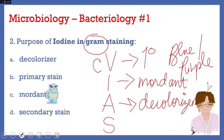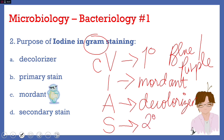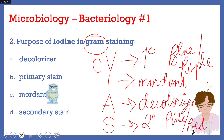The third reagent, acetone alcohol, acts as our decolorizer. This is said to be the most critical step because at this stage we cannot yet differentiate gram-positive from gram-negative bacteria. Gram-positive bacteria retain the primary stain, but gram-negative bacteria are decolorized because of large amounts of lipopolysaccharide on their cell wall. The last letter S stands for safranin, which acts as our secondary stain, taken up only by gram-negative bacteria — they appear pink or red. Gram-positive bacteria are not stained by the secondary stain because they are already stained by crystal violet.